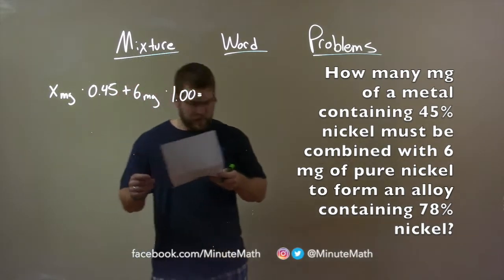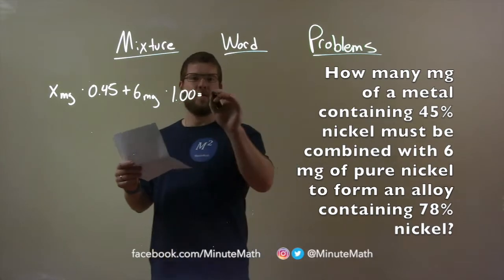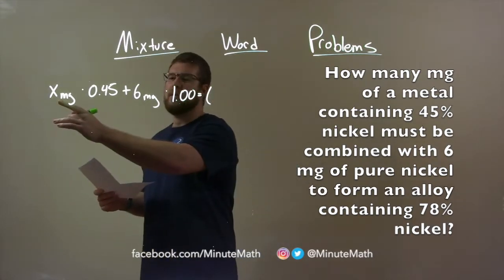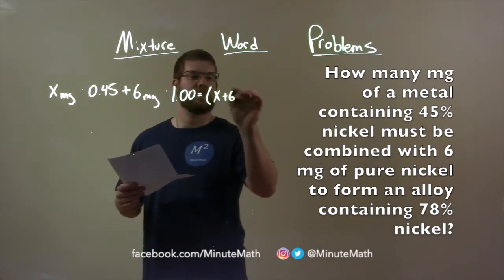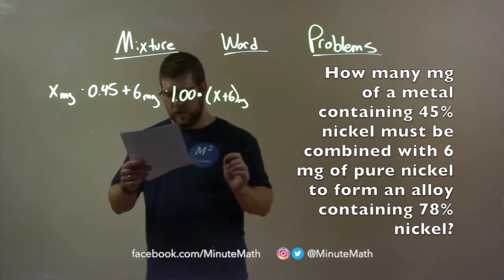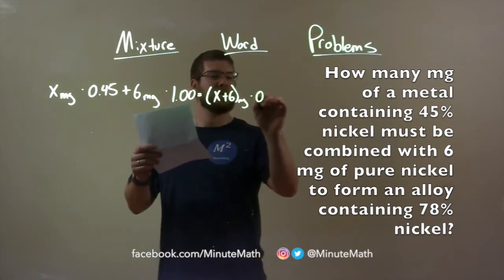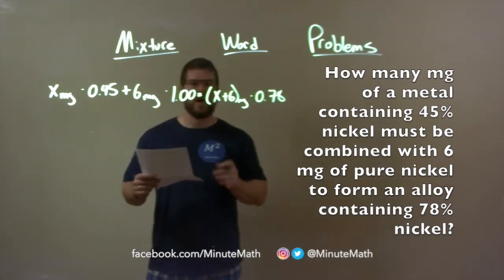That's going to equal some mixture, some final alloy. Total milligrams we don't know, but we know it's these two combined. So X plus 6 milligrams multiplied by 0.78, which represents 78% nickel in the final combination.